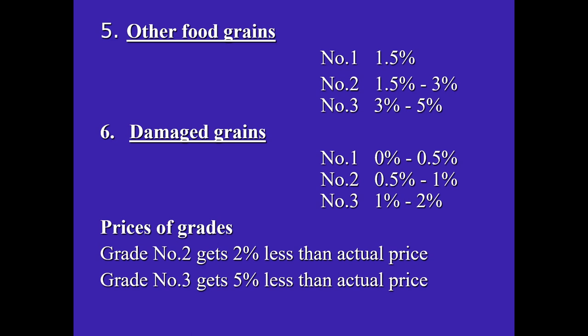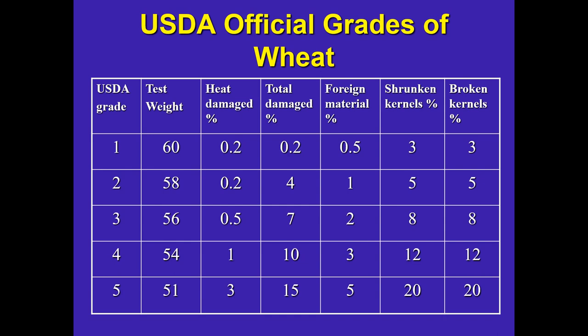The prices of those grades are based on their quality: Grade 2 should be priced 2% less than Grade 1, and Grade 3 should be priced 5% less than Grade 1. The United States Department of Agriculture (USDA) also has official grades for wheat, with different figures for test weight, heat-damaged kernels, total damages, foreign material, shrunken kernels, and broken kernels. There are different criteria for grades 1 through 5, which can be seen in the corresponding tables.